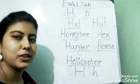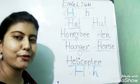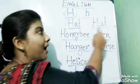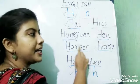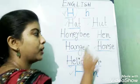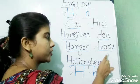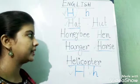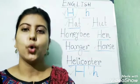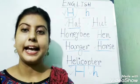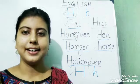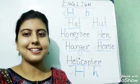Children, please repeat after me. Hat, hut, honeybee, hen, hanger, horse, helicopter. These are the seven words with alphabet H. Now we will learn the next alphabet.